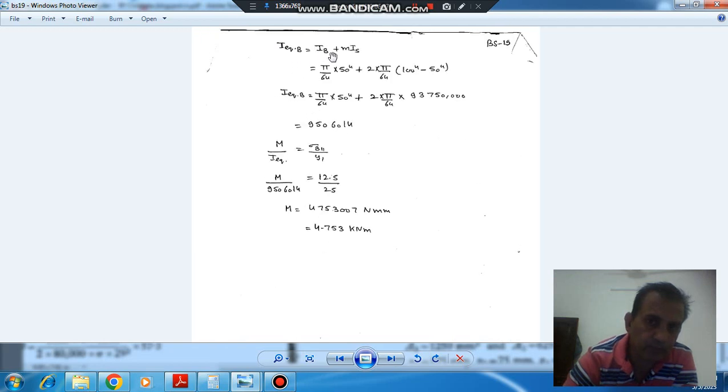So, I_equivalent will be here, I_B plus m·I_S. And I_B is, diameter of inner portion is 50. So I_B is π by 64 times 50⁴. And I_S is π by 64 times (100⁴ minus 50⁴). Okay. So this is your I_B.